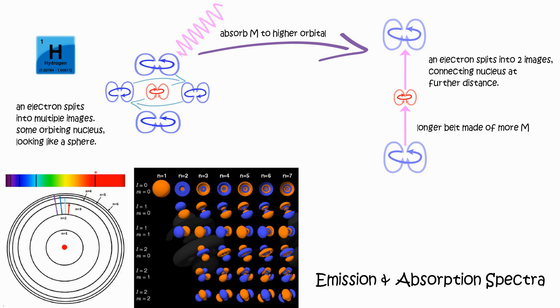Electrons absorbing the right amount of momentum causes them to jump to higher orbitals. The more energy, usually higher frequency, an electron absorbs, the more orbital levels it jumps.